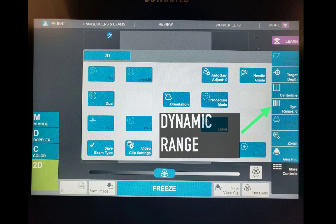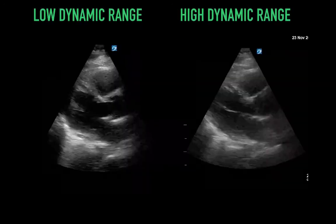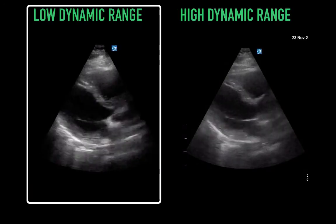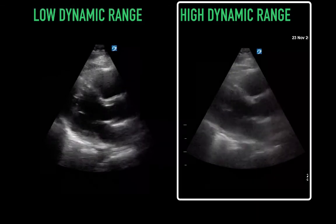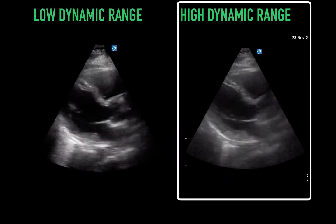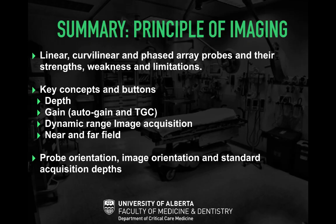Dynamic range is a button few are familiar with but it helps adjust your gray scale. Increasing the dynamic range means more shades of gray, which can make tissue boundaries easier or more difficult to see. Low dynamic range means less gray spectrum, making tissue boundaries easier to see; high dynamic range means more colors across the gray spectrum, making tissue boundaries more challenging to distinguish. In summary, we covered different probe types and key concepts like depth, gain, dynamic range, and near and far field.